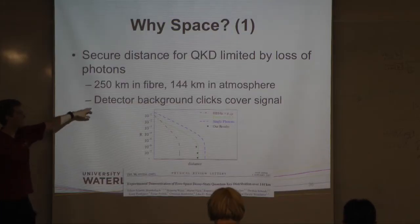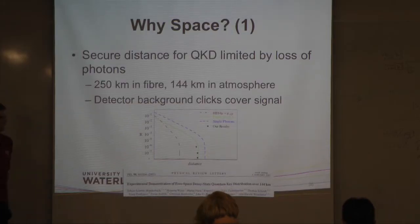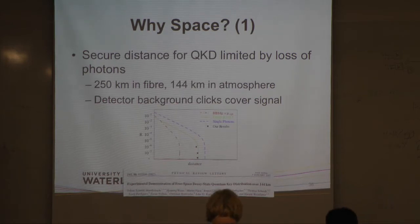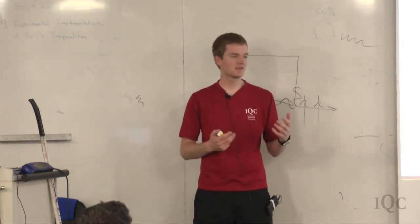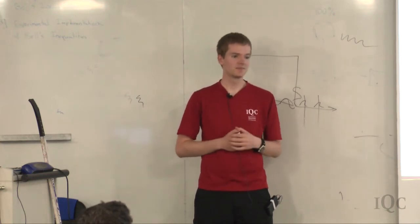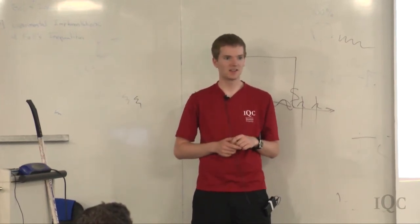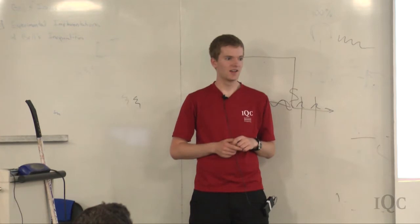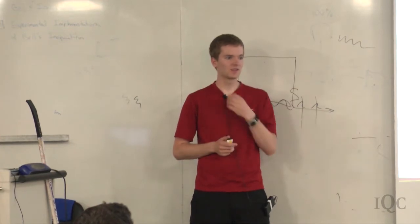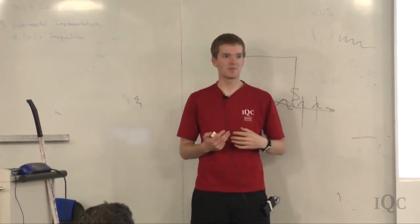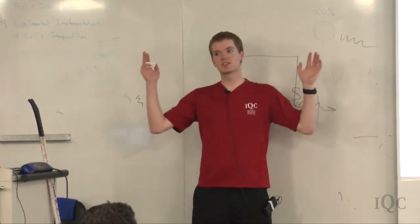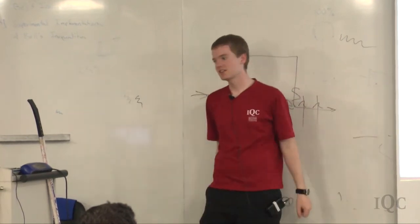The problem is that detector dark counts start to cover the signal. The detectors sometimes click even when there are no photons present, and since this happens randomly, that's a 50% error rate - way too much for QKD. As soon as the number of arriving photons is less than the number of dark counts, the error rate shoots up and QKD is no longer possible.